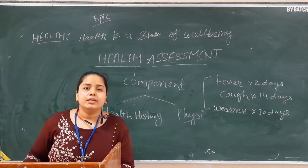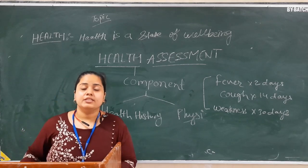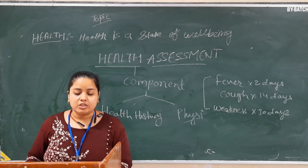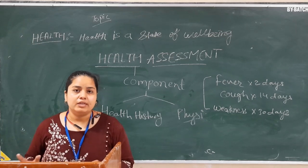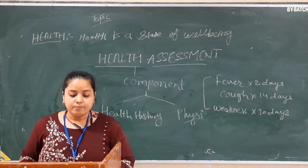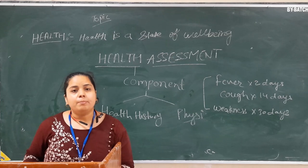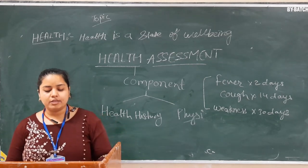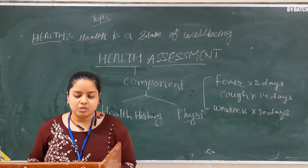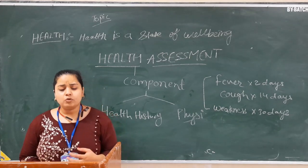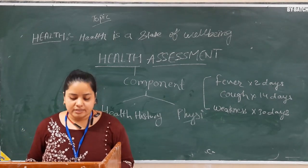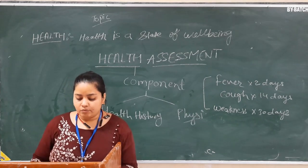Next is the history related to present illness — we take the history of the current disease including its location, quality, quantity, chronology, and setting. Then for past health history, we note allergies, previous medical diseases, surgery, trauma, injury, hospitalization, childhood diseases, immunization, obstetric history, and recent investigations.